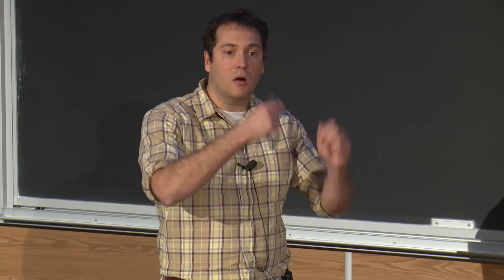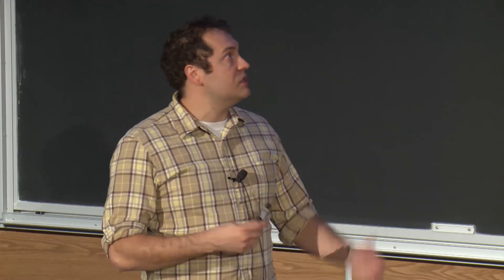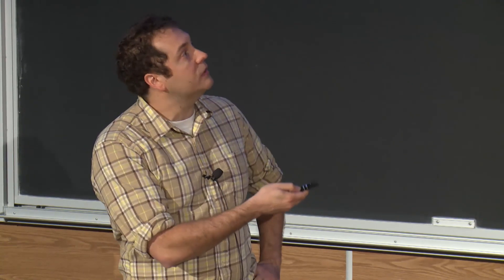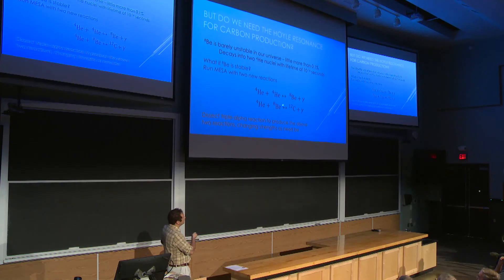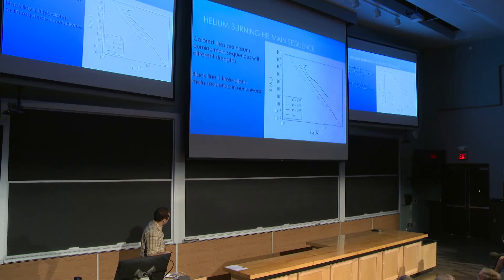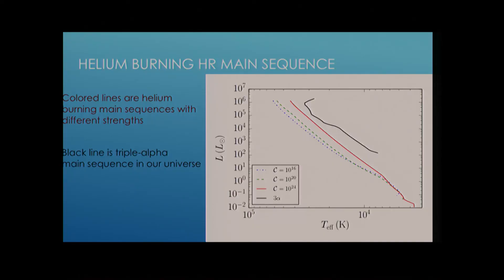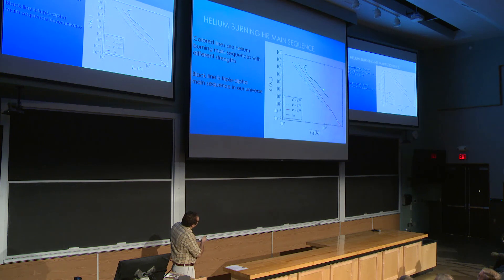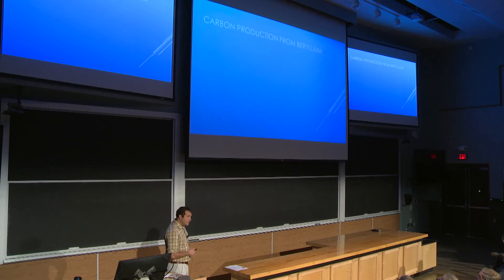And what we did is we used the MESA stellar code and added in two new reactions. So this is the double alpha reaction to a stable beryllium-8, which can later capture another alpha particle and produce carbon-12. So this does not at all rely on the triple alpha reaction in the resonance, in the Hoyle resonance. So we took the triple alpha reaction, we took it apart, since it's basically a conglomeration of multiple things, and we used those different cross sections in these two reactions. And we had to change the strengths of those cross sections compared to our universe. This HR diagram that you see on the right shows the helium burning main sequence. The colored lines are for different cross sections. The larger the C value, the larger the cross section. This is helium burning to beryllium.